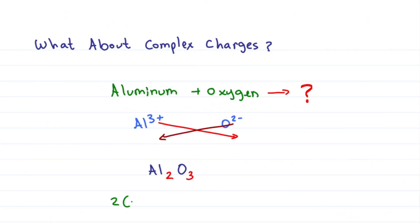That's 2 aluminum with a charge of plus 3 and 3 oxygen with a charge of minus 2, giving me plus 6 minus 6 for a net charge of 0 for an ionic compound Al2O3, aluminum oxide.